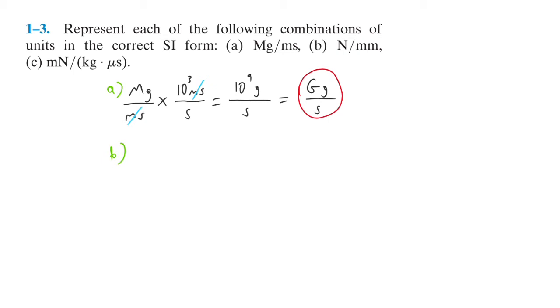Part B: we're given Newtons over millimeter. We want to convert that to meters, so for every meter there are ten to the third millimeters. Those cancel, which gives us kilonewton per meter. That's the second one.